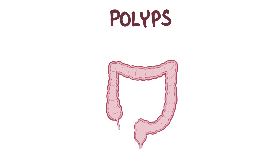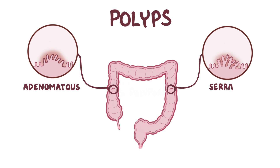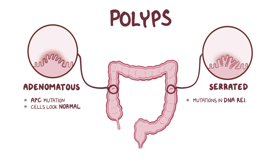There are many different types of polyps, and some are more prone to becoming malignant. Those are called premalignant or neoplastic polyps, and these premalignant polyps can be classified into adenomatous and serrated, according to how they look under the microscope. Typically adenomatous polyps have an APC mutation and the cells look like normal colonic mucosa cells, whereas serrated polyps have defects in DNA repair genes and have a sawtooth appearance.